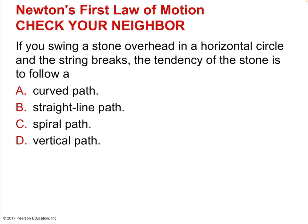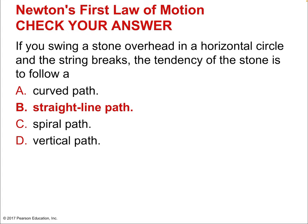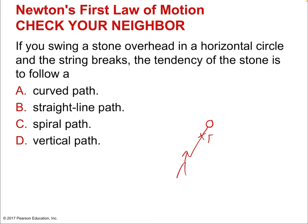Another check: if you swing a stone overhead in a horizontal circle and the string breaks, what is the tendency of the stone? Imagine you're swinging a string and right when it's directly overhead, the string breaks. What path will that stone take? It's a straight line path — the principle behind the ancient weapon, the sling. The moment the string breaks and there's no more tension force, whatever is the instantaneous velocity of the stone at that moment is the velocity it will maintain. Eventually gravity will start acting on it, but at the instant the string breaks, it will be taking a straight line path.